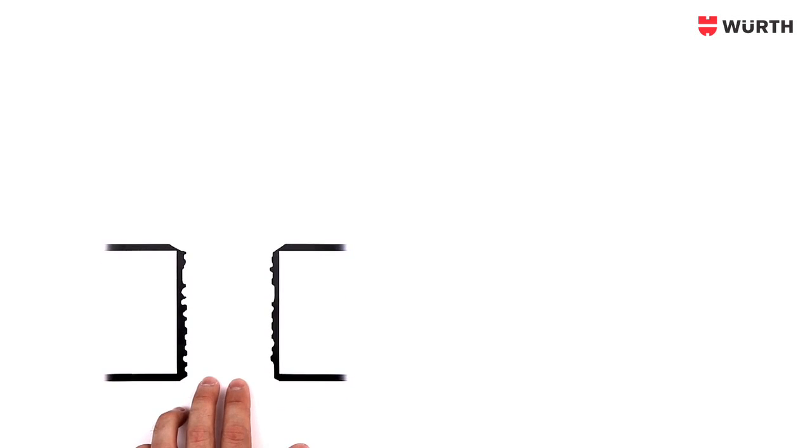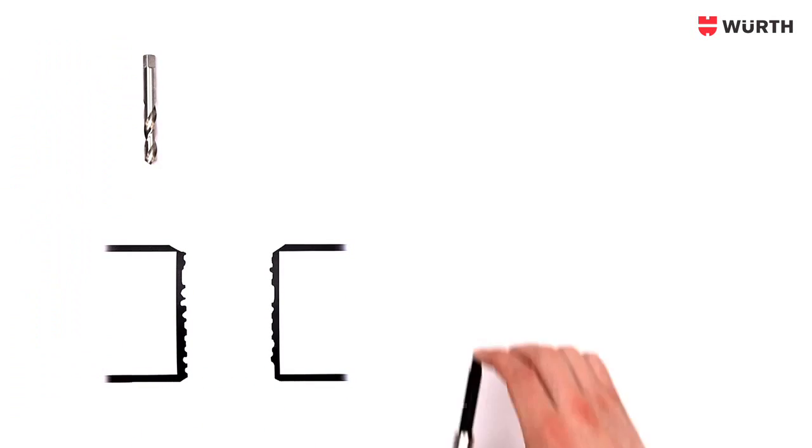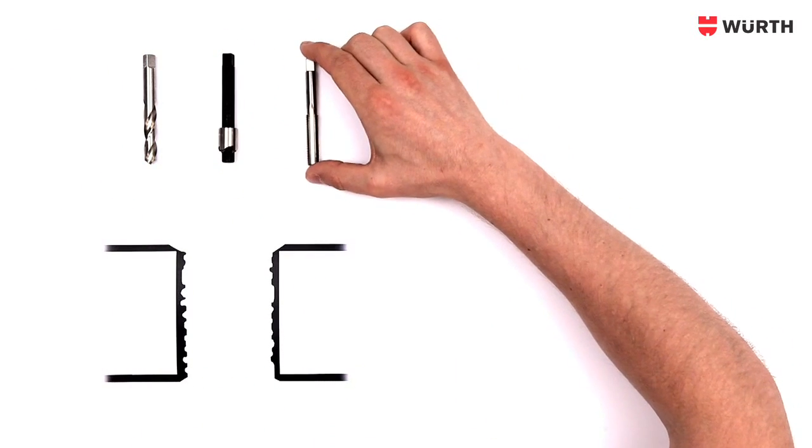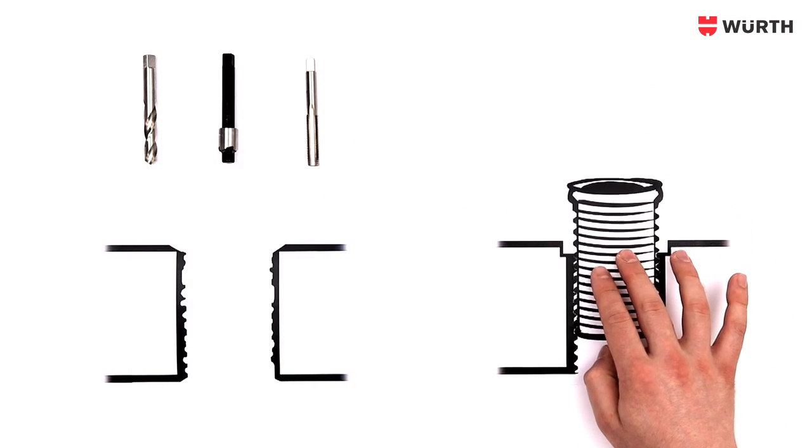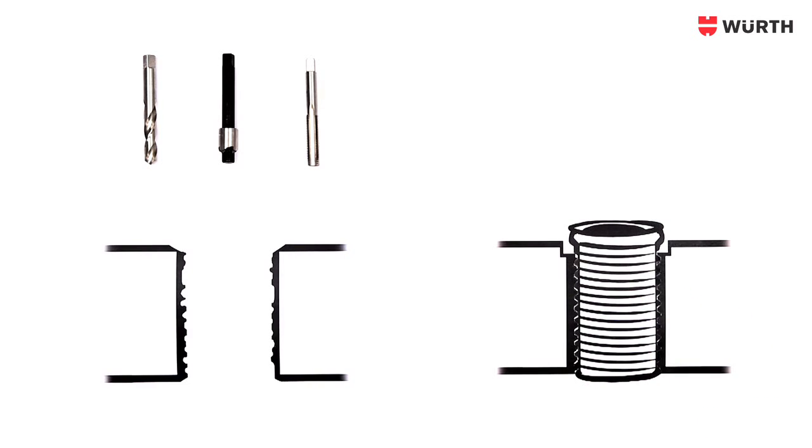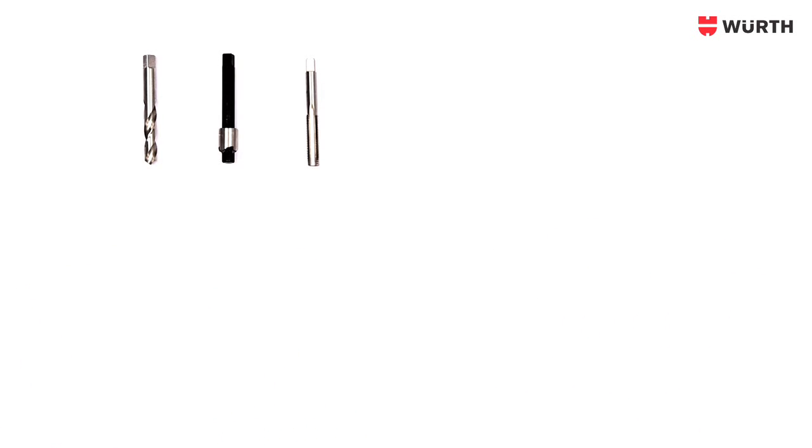And this is how it works. After the damaged thread is drilled out and the seat has been counterbored, the mating thread is newly tapped. Mr. Macher now inserts the TimeSert bushing insert and the seat prevents the insert from being screwed in too far.